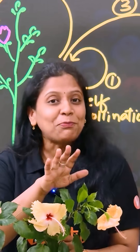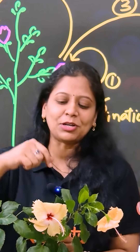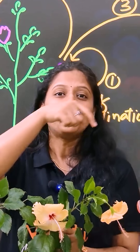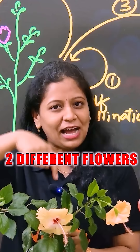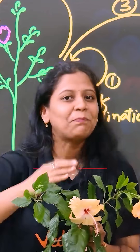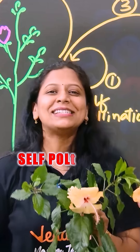If pollination happens between this flower and this flower — two different flowers of the same plant — we have self-pollination.